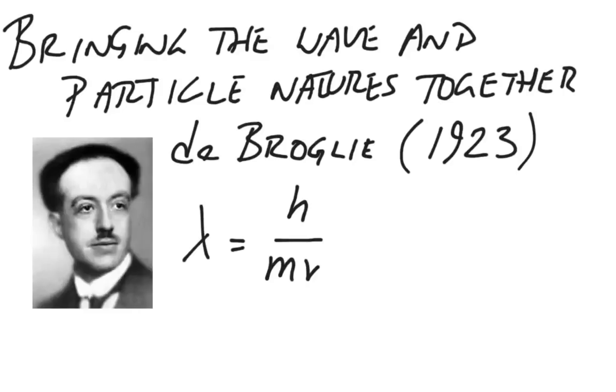A year later, the idea of light took another step further with a chemist by the name of Louis de Broglie in 1923. De Broglie tied the two together by saying that light is not a wave and light is not a particle. Light, in fact, is both.